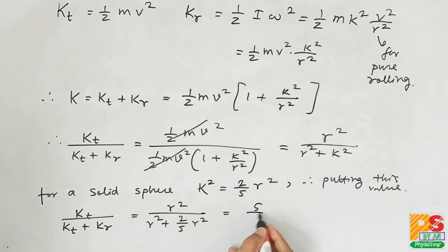It will become 5 divided by 7. Well, that is the answer. Option 2 is correct.